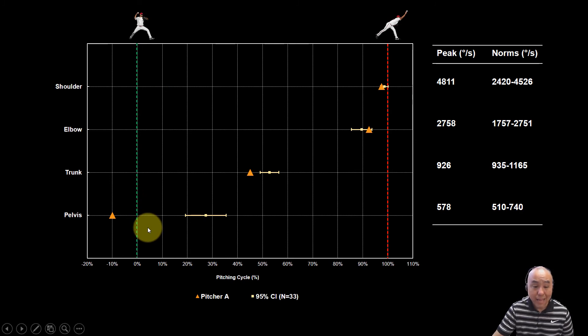This right here is a summarized graph of, more specifically, the timing of these various segments, the kinematic sequence, in relation to what we find in a sample of 33 adult pitchers here. So you can see for this player, his pelvis angular velocity peaks before front foot contact, which is actually a good thing, followed by the trunk, followed by the elbow and shoulder.